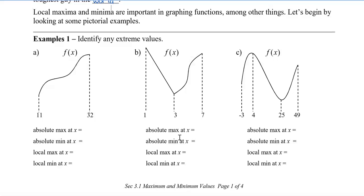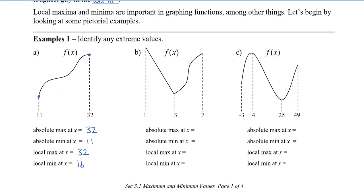Let's take a look at this first example. We have the absolute max at x. There are only two values here — a point with a given value and another point. The maximum occurs at x equal to 32, which is up here. The absolute min occurs at an x value of 11. The local max, because there's only one max, will also be 32. And the local min, since there's only one min, will also be 11.